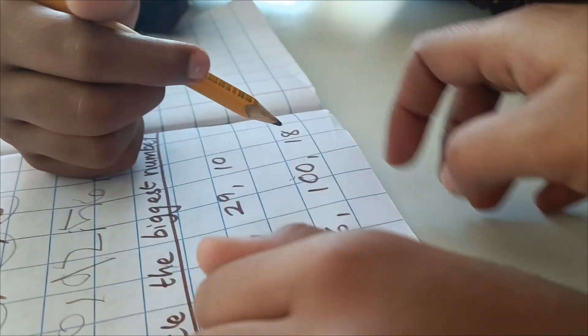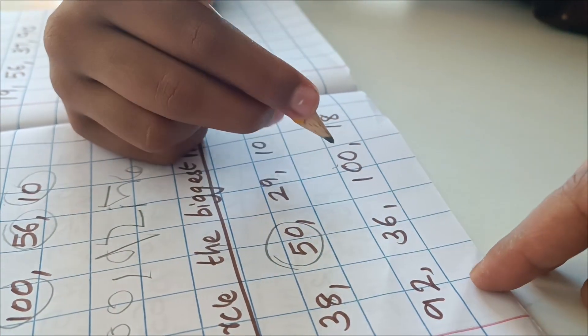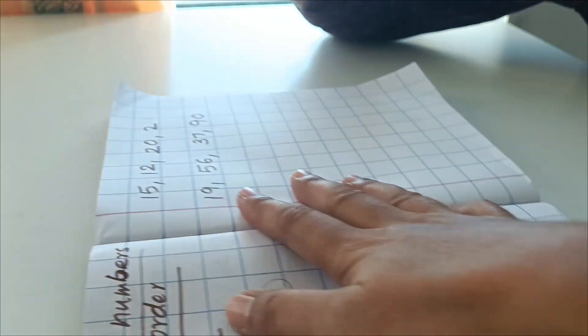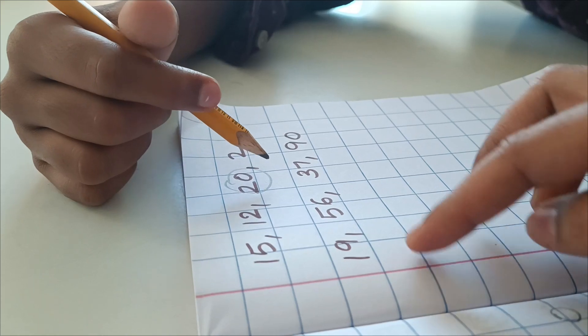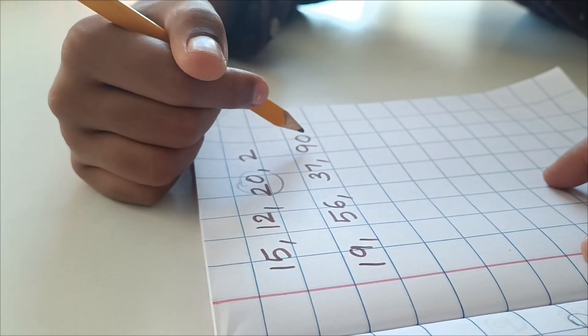Now in this group which is the biggest number? 100. 40. Now in this group which is the biggest number? 20. And in the last one which is the biggest number? 90.